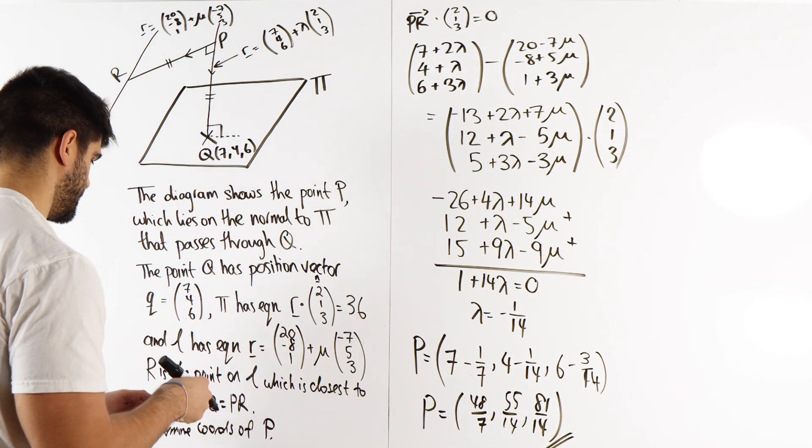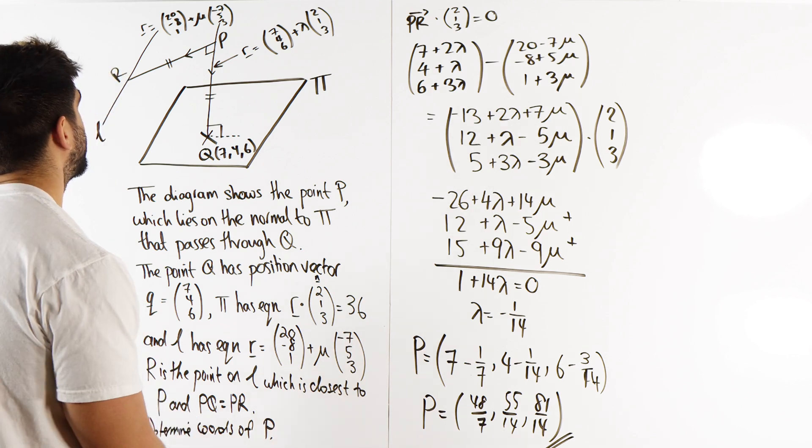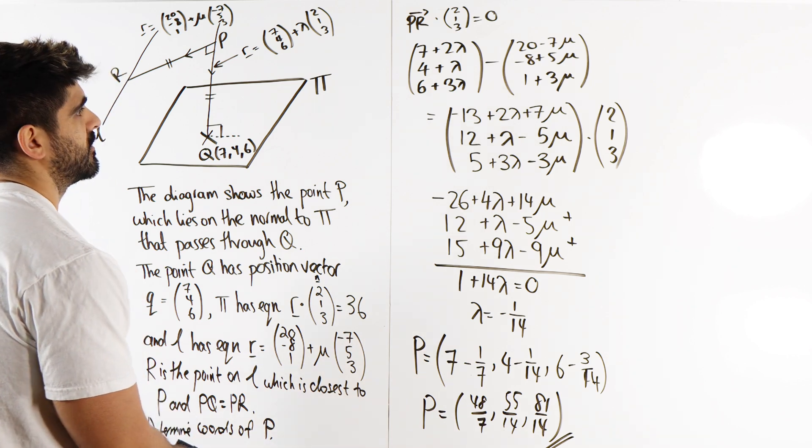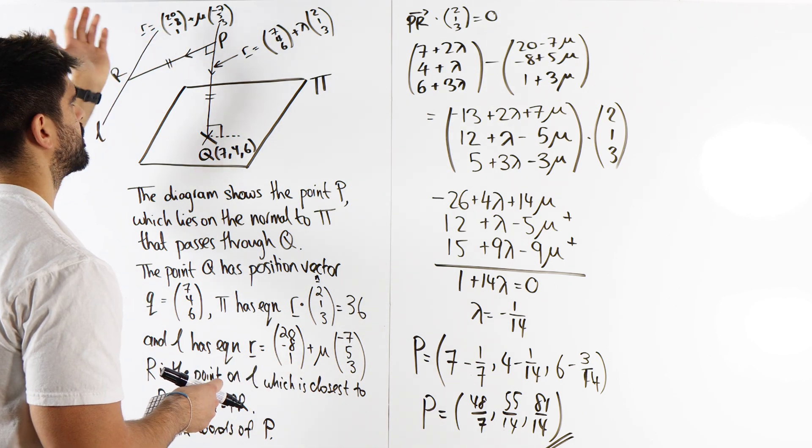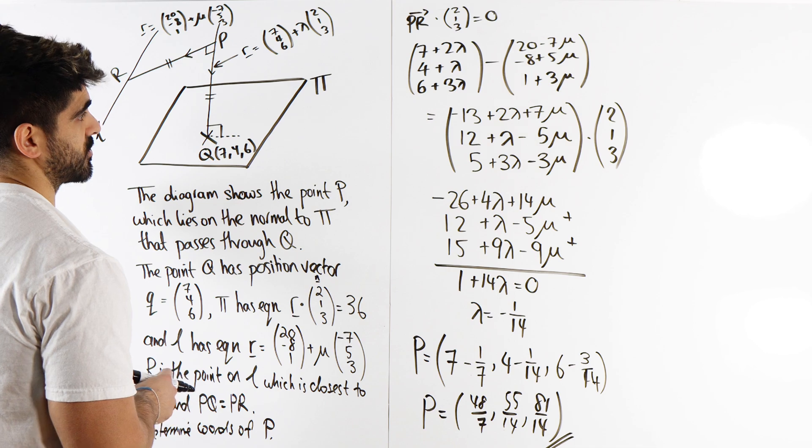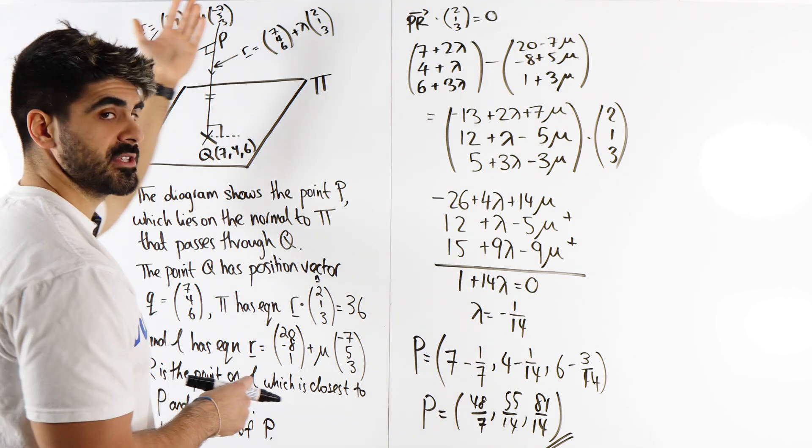And that is that. Just to find the coordinates of P. So yeah, I didn't even need to. Oh no wait. Yeah, that was the direction dotted with that, made it equal to 0. Luckily things all cancelled out to work out lambda is minus 1 over 14. So yeah, that is that.